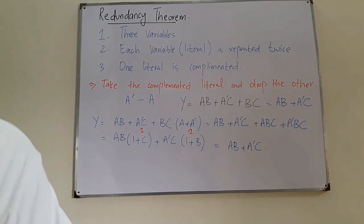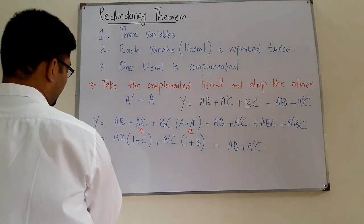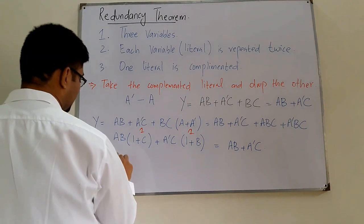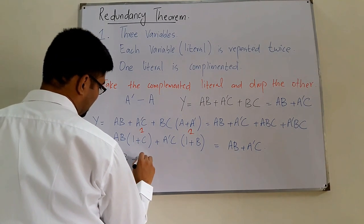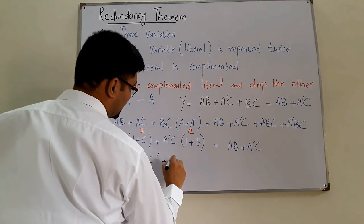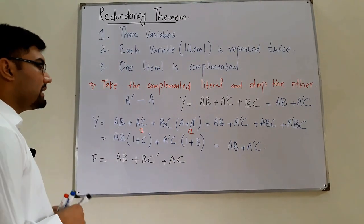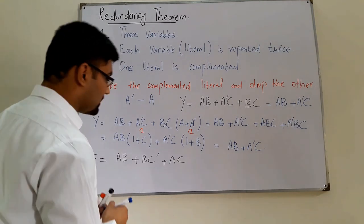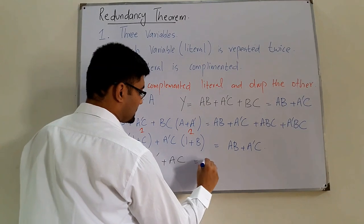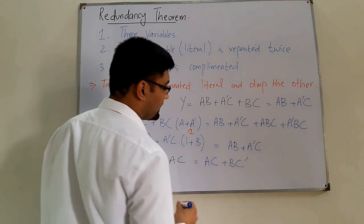Another example: F = AB + BC' + AC. Again three variables, each repeated twice, one literal complemented. Taking the complemented terms — we drop AB and take AC + BC', so F simplifies to AC + BC'. You can prove it yourself as shown before.